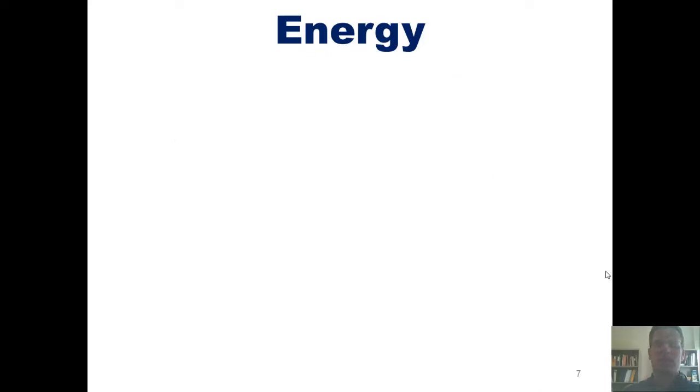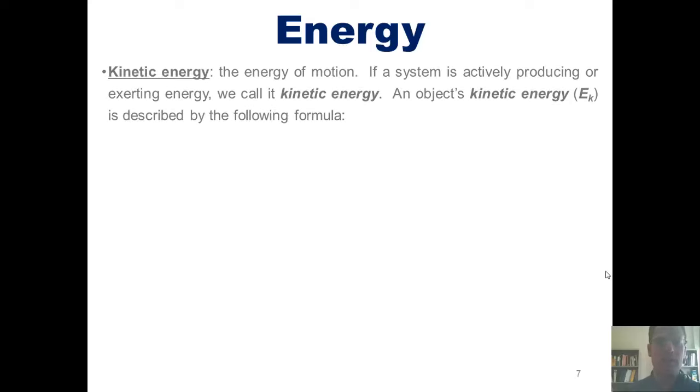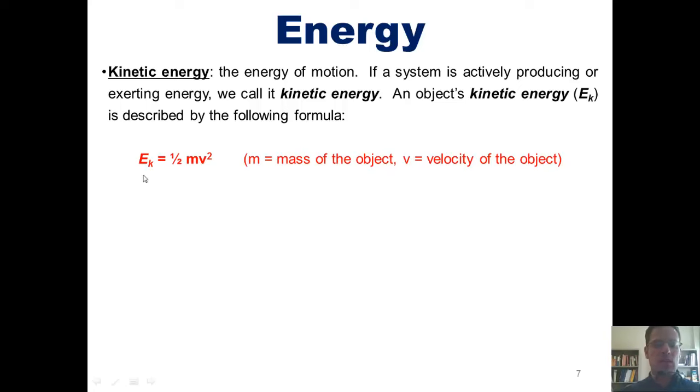We now move on to discussing energy a little further. As it turns out, there are two different kinds of energy. One of them is kinetic energy. Kinetic energy is the energy of motion. If a system is actively producing or exerting energy, we call that energy kinetic energy. An object's kinetic energy, which is often abbreviated with the symbol E sub k, is described using the following formula: E sub k equals 1 half mv squared, where m is the mass of an object and v is the object's velocity.